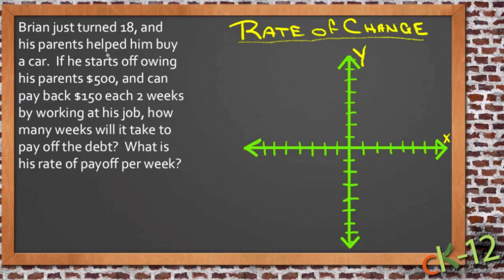So Brian just turned 18 and his parents helped him buy a car. If he starts off owing his parents $500 and can pay back $150 each two weeks by working at his job, how many weeks will it take him to pay off the debt? And what is his rate of payoff per week?